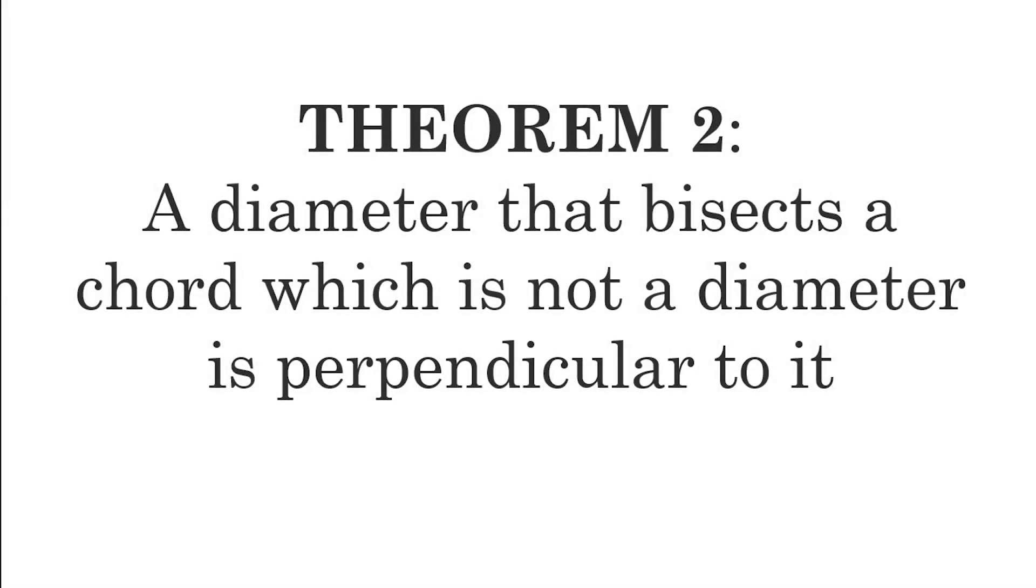Let's have theorem number two. A diameter that bisects a chord, which is not a diameter, is perpendicular to it. Again, a diameter that bisects a chord, which is not a diameter, is perpendicular to it.